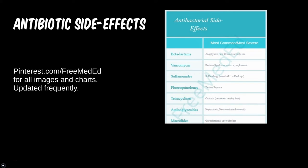Aminoglycosides are also ototoxic — this seems to be a common theme for antibiotics — though occurrences are more commonly associated with tetracyclines. There is also concern for nephrotoxicity and neurotoxicity with aminoglycosides. Macrolides are best — or worst — known for GI upset.